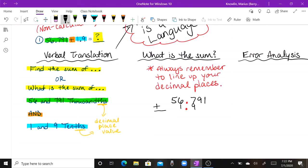So 56 and 791 thousandths plus 1 and 9 tenths. Now that I have that all lined up properly, now all I need to do, I can go ahead and add. But right before I add, I want to fill in those empty place values with the zeros. Because zero is essentially a place value holder. So now that we've done that, we can go ahead and add.